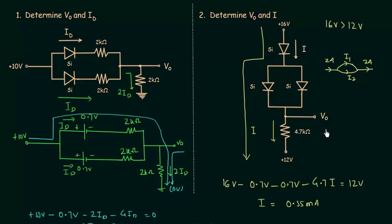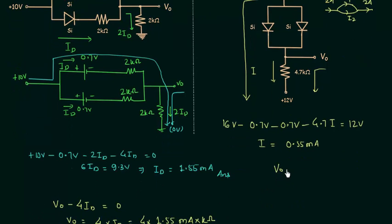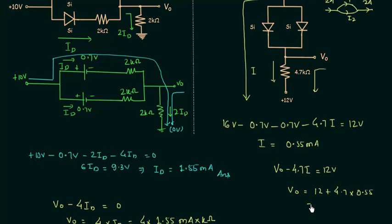Now I will calculate V0, moving in this direction towards 12V. V0 minus 4.7I equals 12V, so V0 is simply equal to 12 plus 4.7 multiplied by 0.55, which equals 14.6V. This is the answer we had to calculate in this problem.